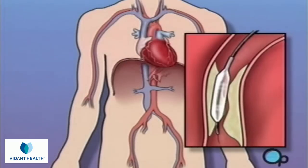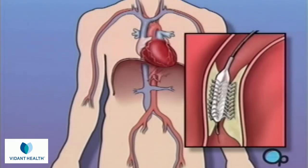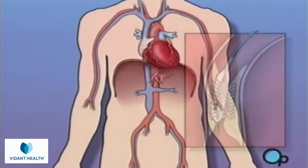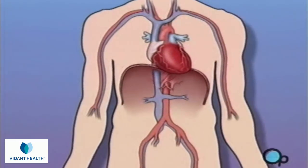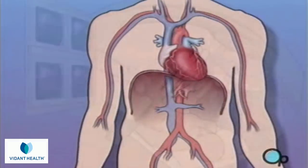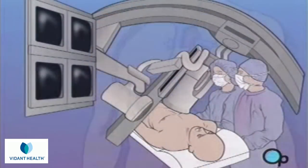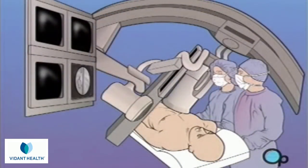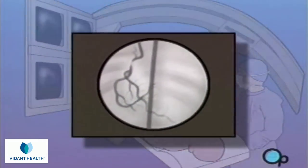A short length of mesh tubing called a stent is then inserted into the newly widened artery. During and after the procedure, your doctor will take x-rays in order to monitor your progress.